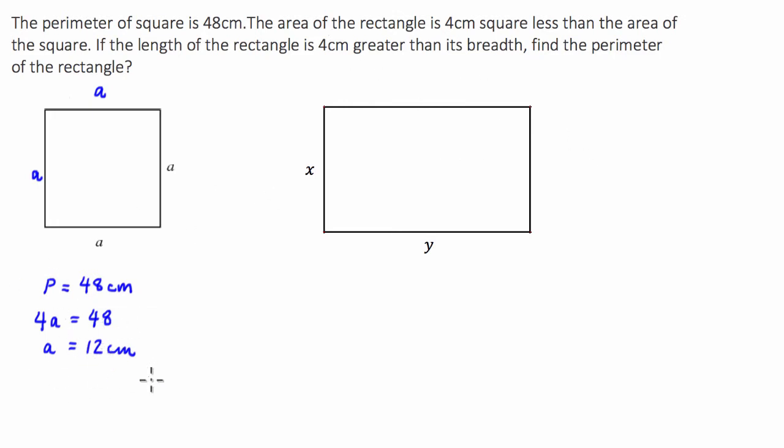If the side length of the square is 12 centimeters, we can then say that the area of this square is going to be 12 squared or 144 centimeters squared.